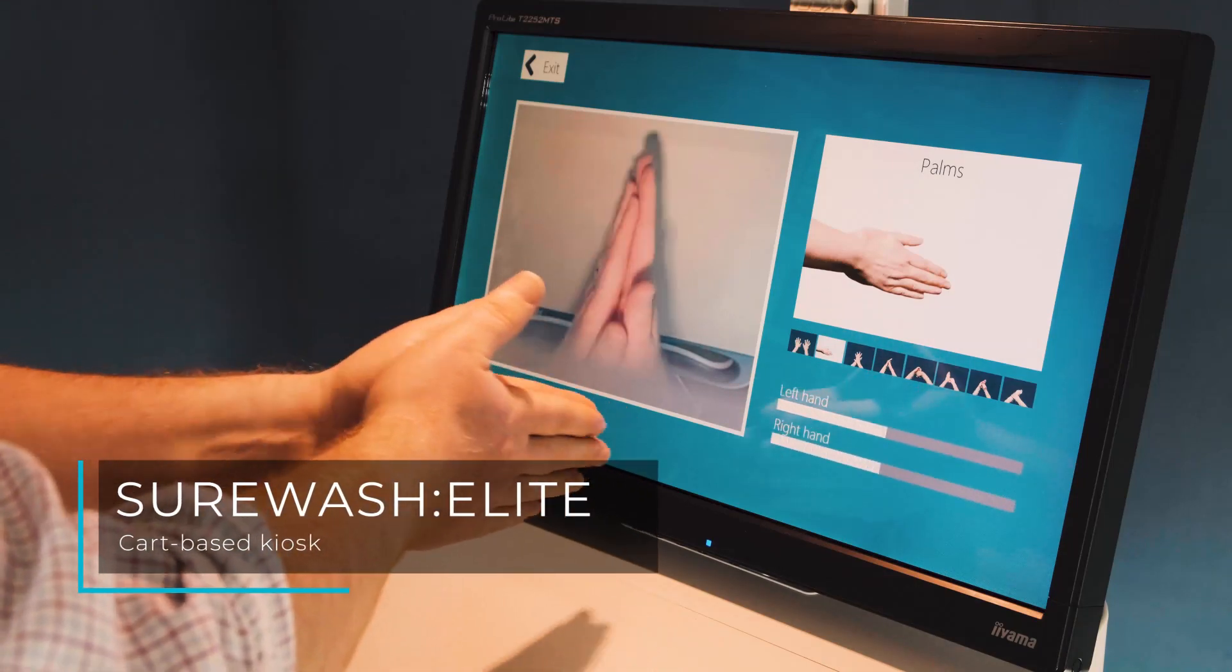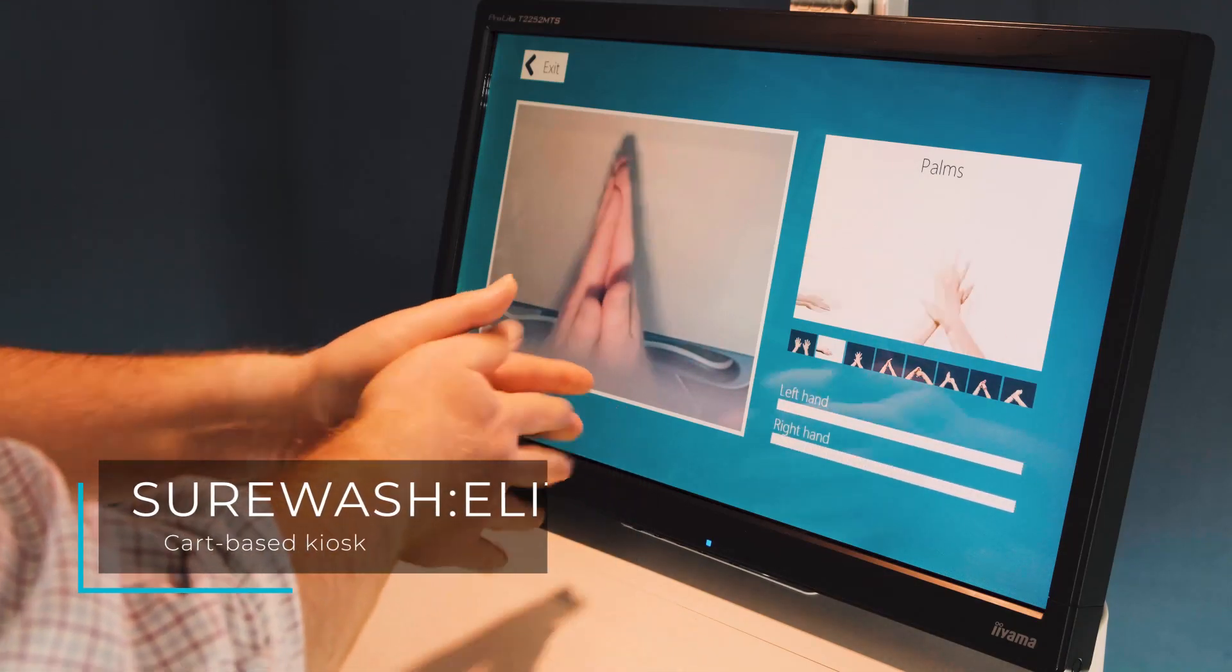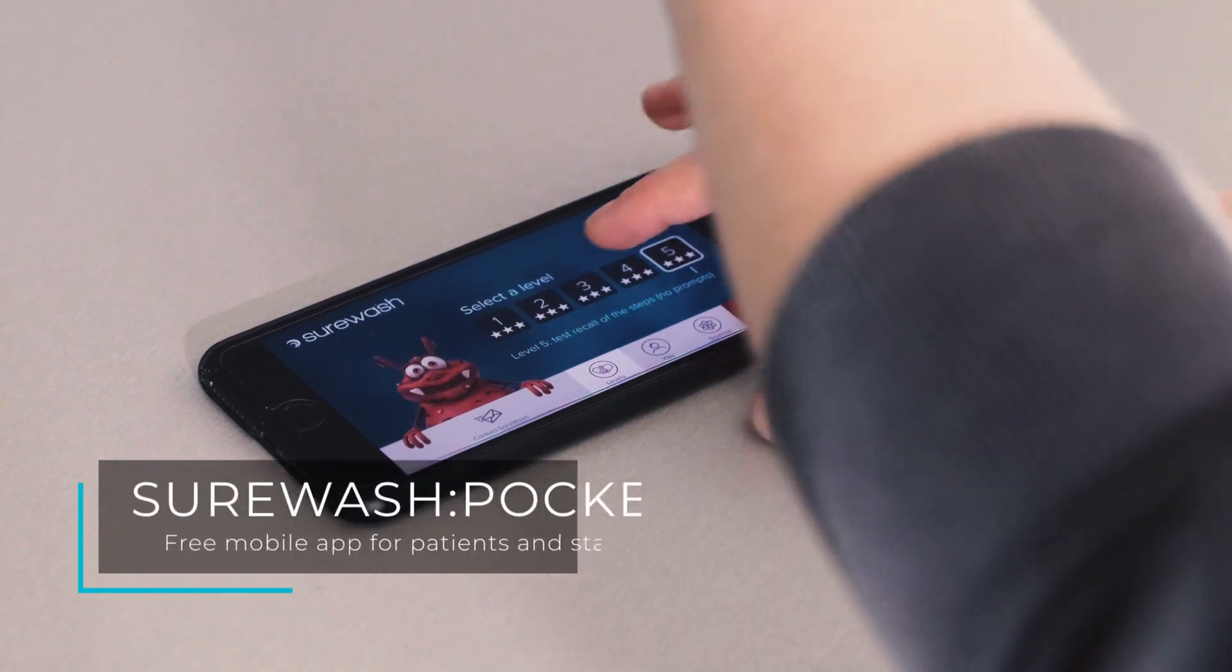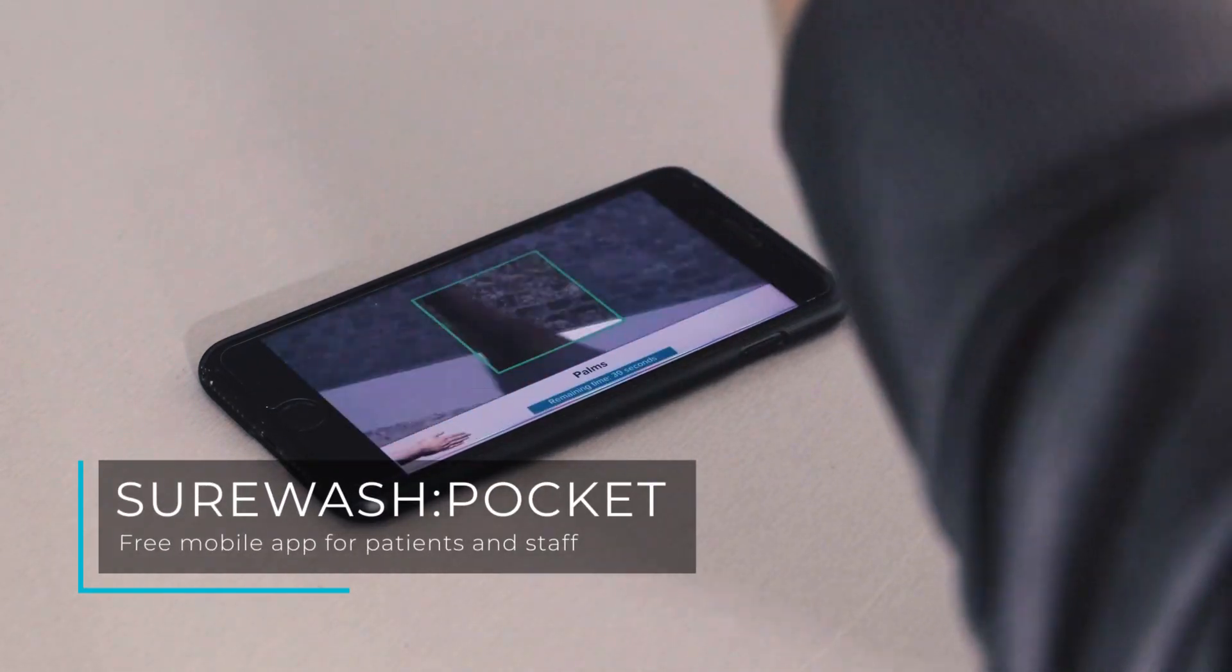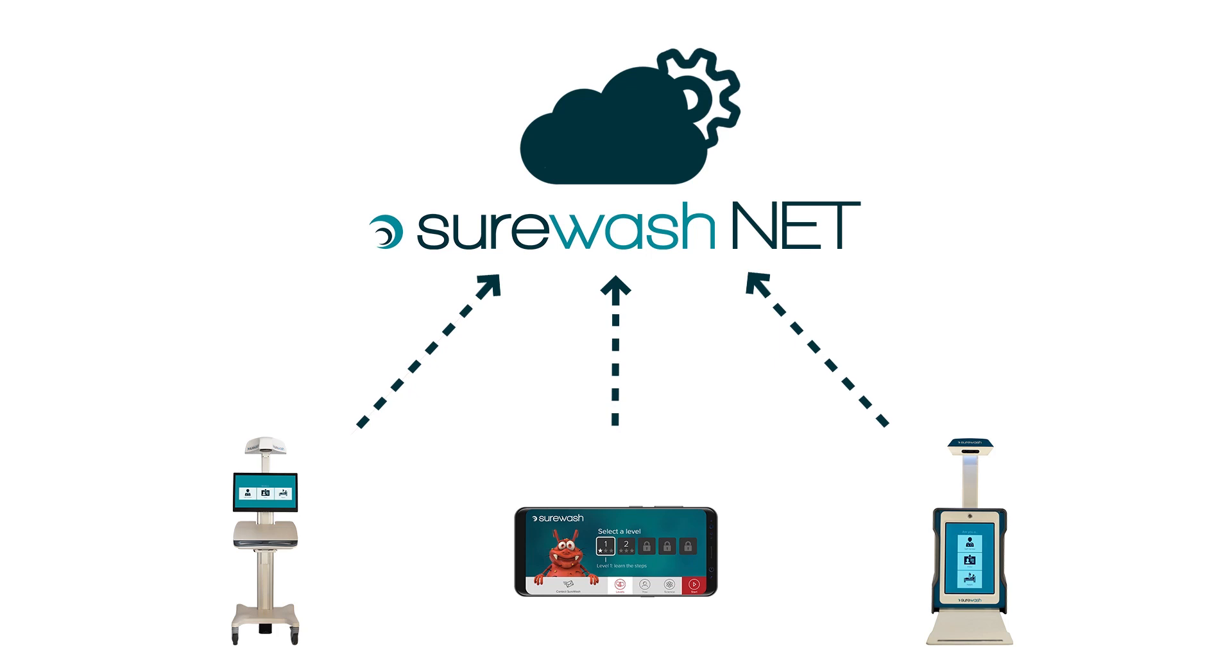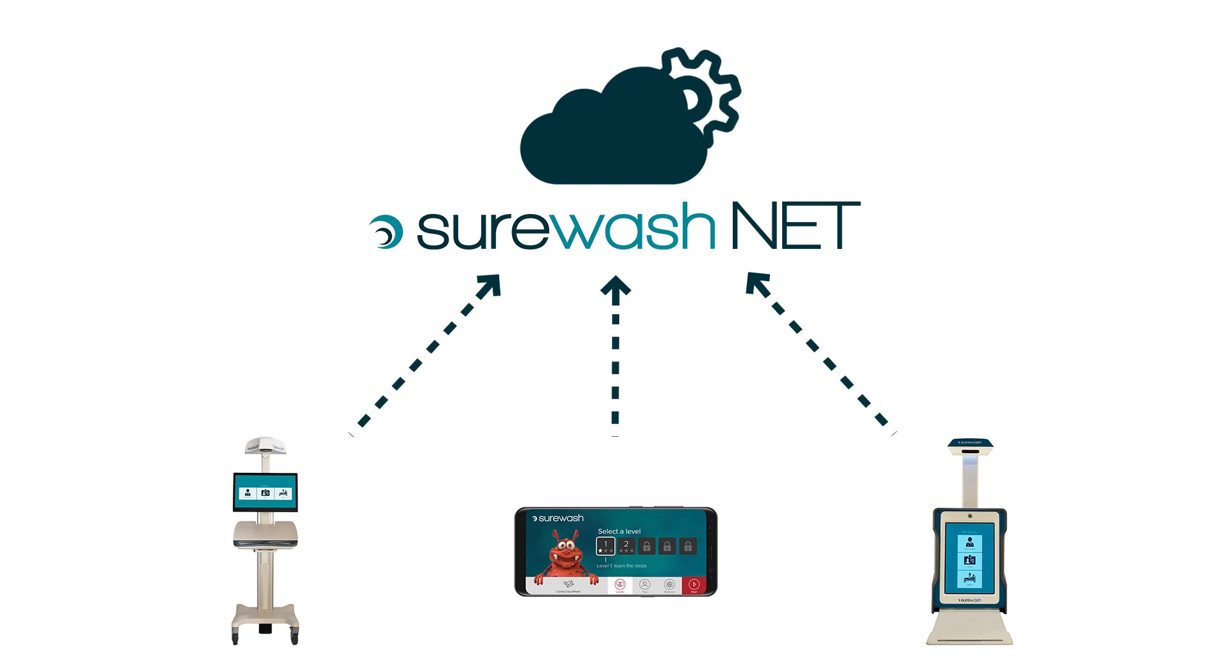SureWash devices are flexible and can be wall mounted, portable, or on a cart. There is even a smartphone app that uses the built-in camera to provide the SureWash training.